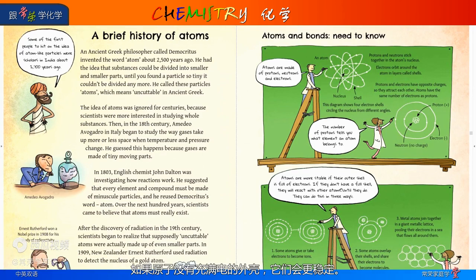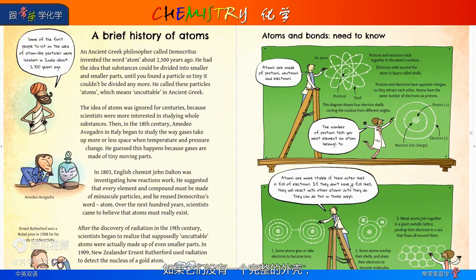Atoms are more stable if their outer shell is full of electrons. If they don't have a full shell, they will react with other atoms until they do.